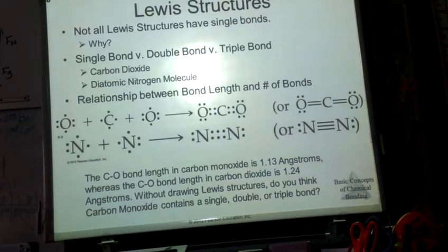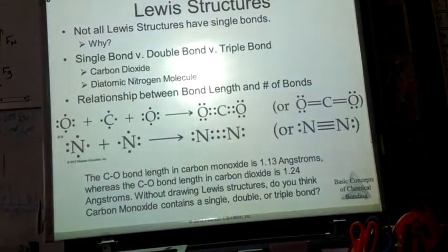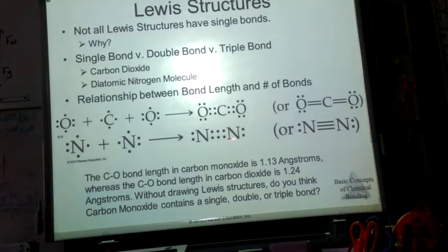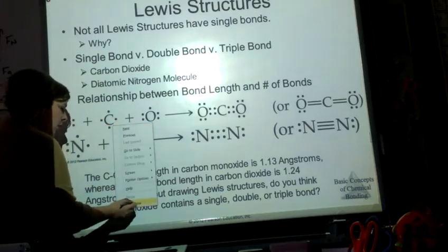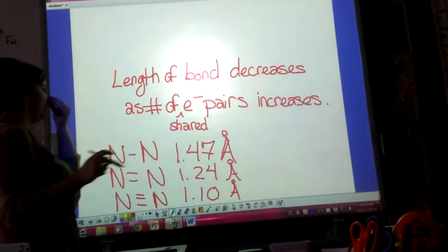Hi everyone, we're going to continue on with the video. I'm sorry that it cut off earlier, but that was because we had school starting. So let me go back. We talked about single bond, double bond, triple bond, and then we looked at both carbon dioxide as well as the nitrogen molecule in terms of their Lewis structures.